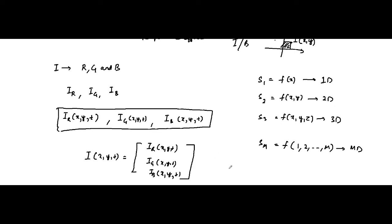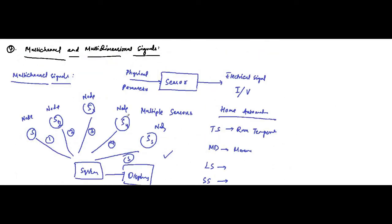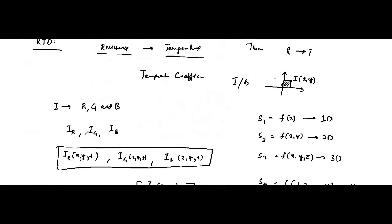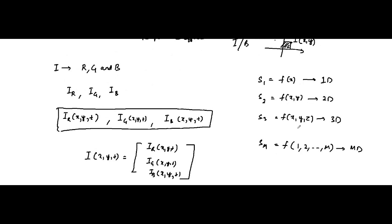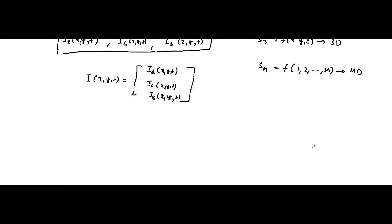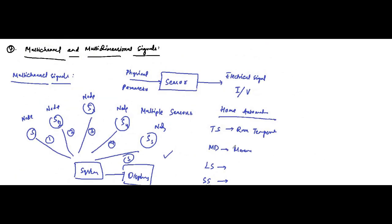These are the basic concepts related to multichannel signals — signals from multiple sources processed through a common system — and multidimensional signals, where a signal is dependent on multiple parameters or variables, leading to one-dimensional, two-dimensional, three-dimensional, and M-dimensional signals depending on how many variables it depends upon. We have discussed ways to classify and categorize signals depending on the requirement of the study, giving us a different point of view and a different aspect of the signal through each categorization.